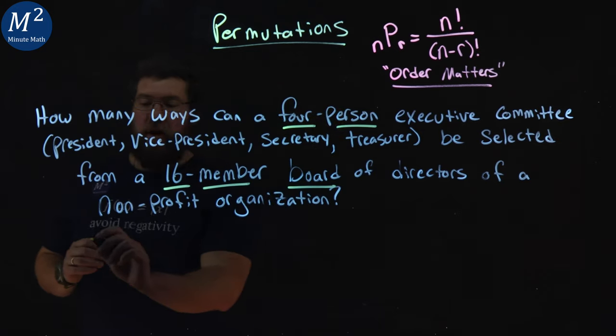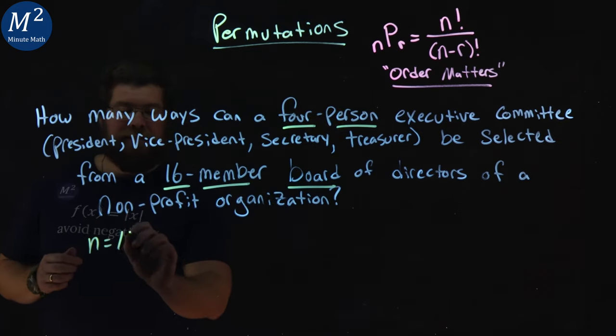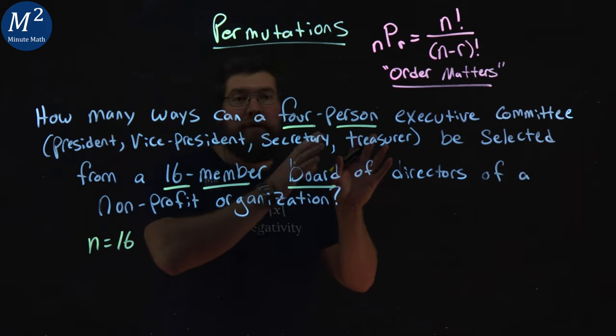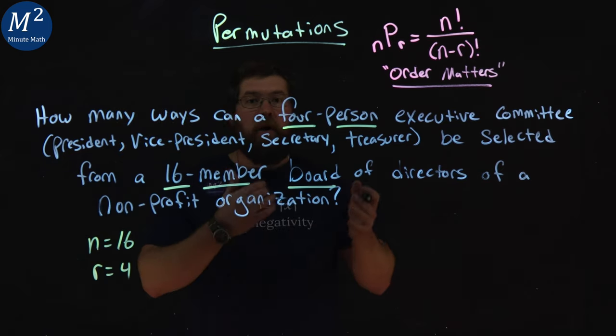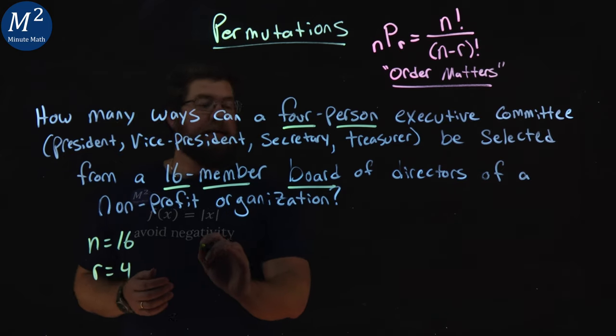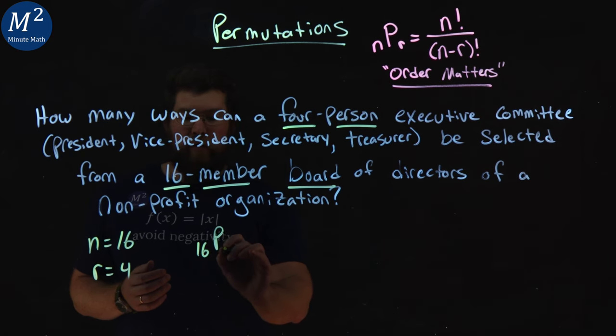So in this case here, our n, our total number of people here, is 16, and there are four positions available. That's going to be our r. So to follow our formula for nPr, we have 16P4.